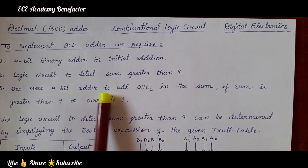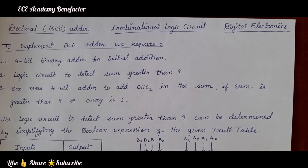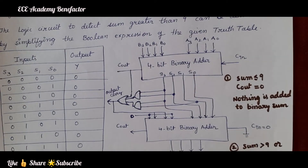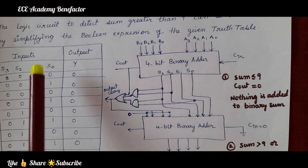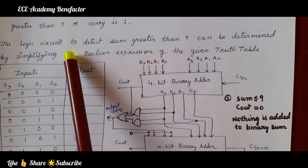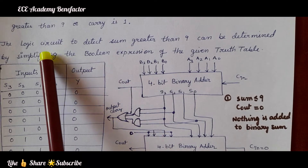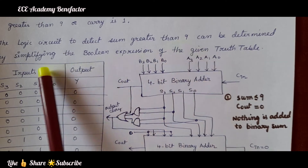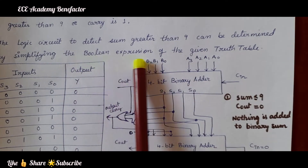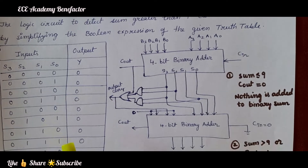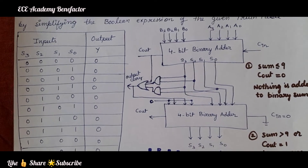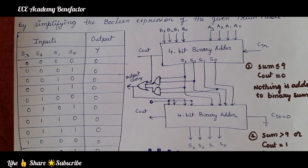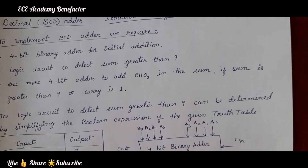How can we design this adder circuit? For that, we need a truth table. So this is the truth table. The logic circuit to detect sum greater than 9 can be determined by simplifying the Boolean expression of the given truth table. First we need to write the truth table.